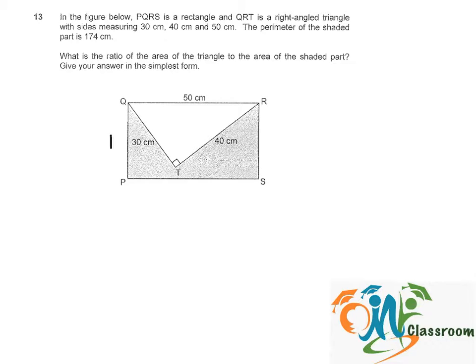Let me write this down. This side is the breadth, RS is also the breadth, and PS is the length which is 50. So we have 2 times the breadth plus 30cm plus 40cm plus 50cm equals 174cm.